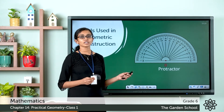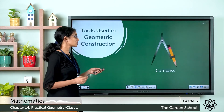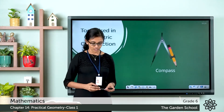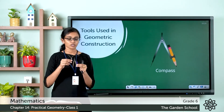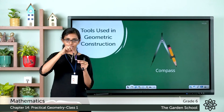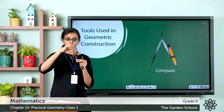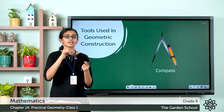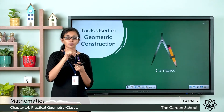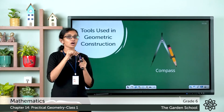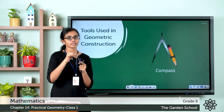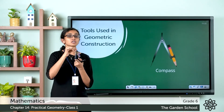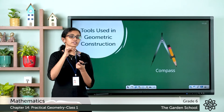Let's see the next tool in your geometry box — it is the compass. Let's see the parts of a compass. At the top there is a hinge about which you can hold the compass. There are two arms: one arm has a hold for a pencil and the other arm has a sharp pointed edge.